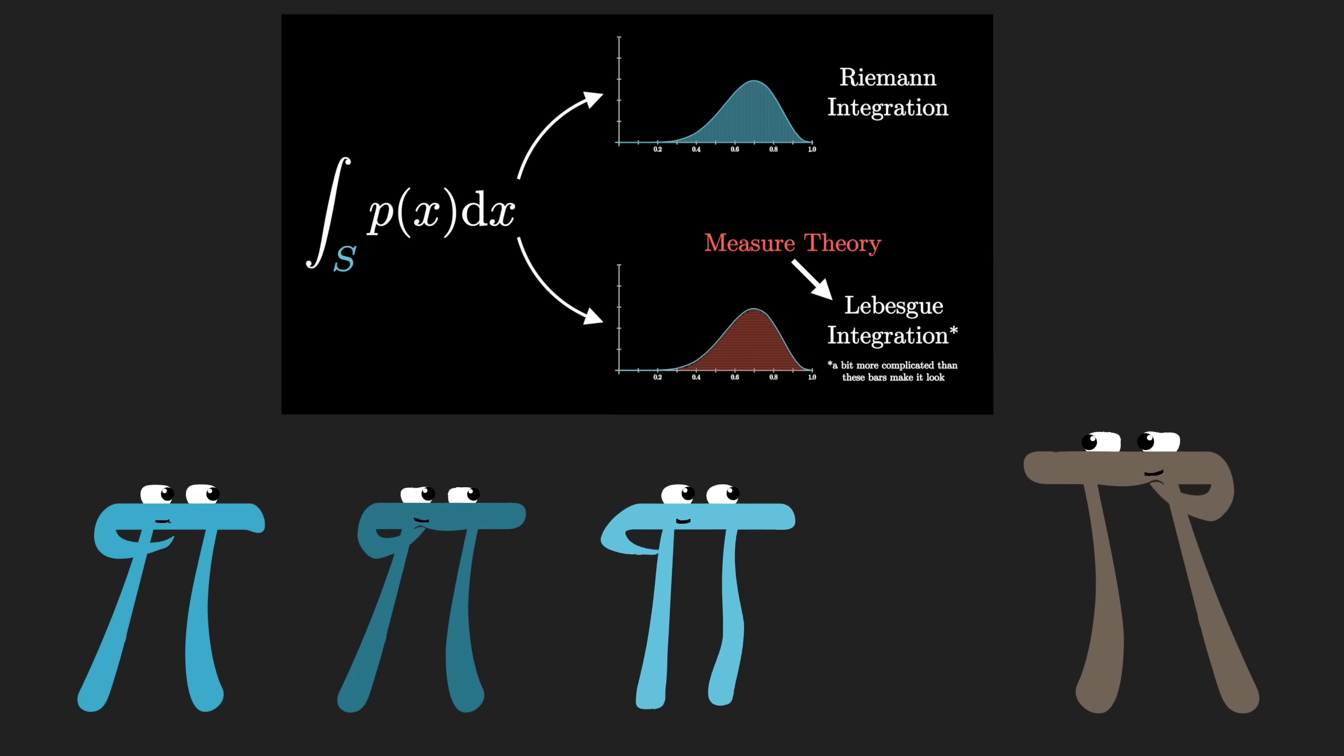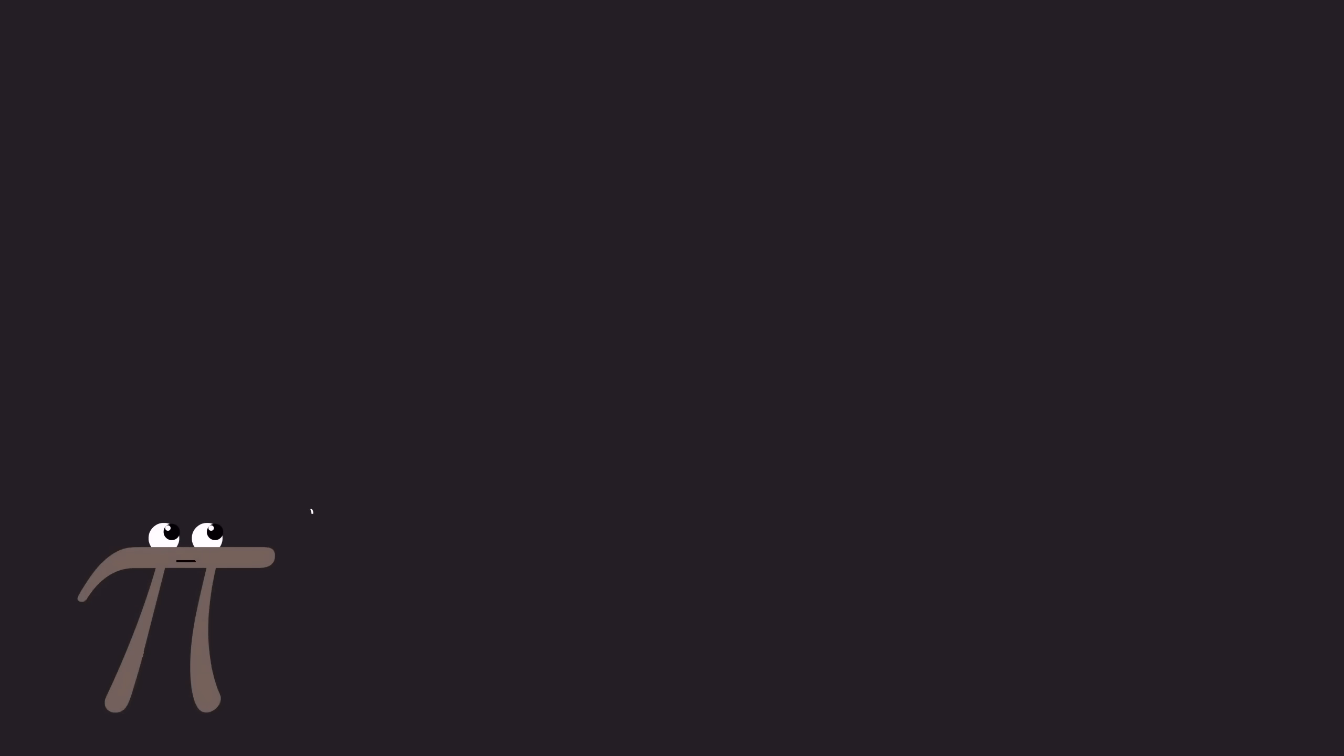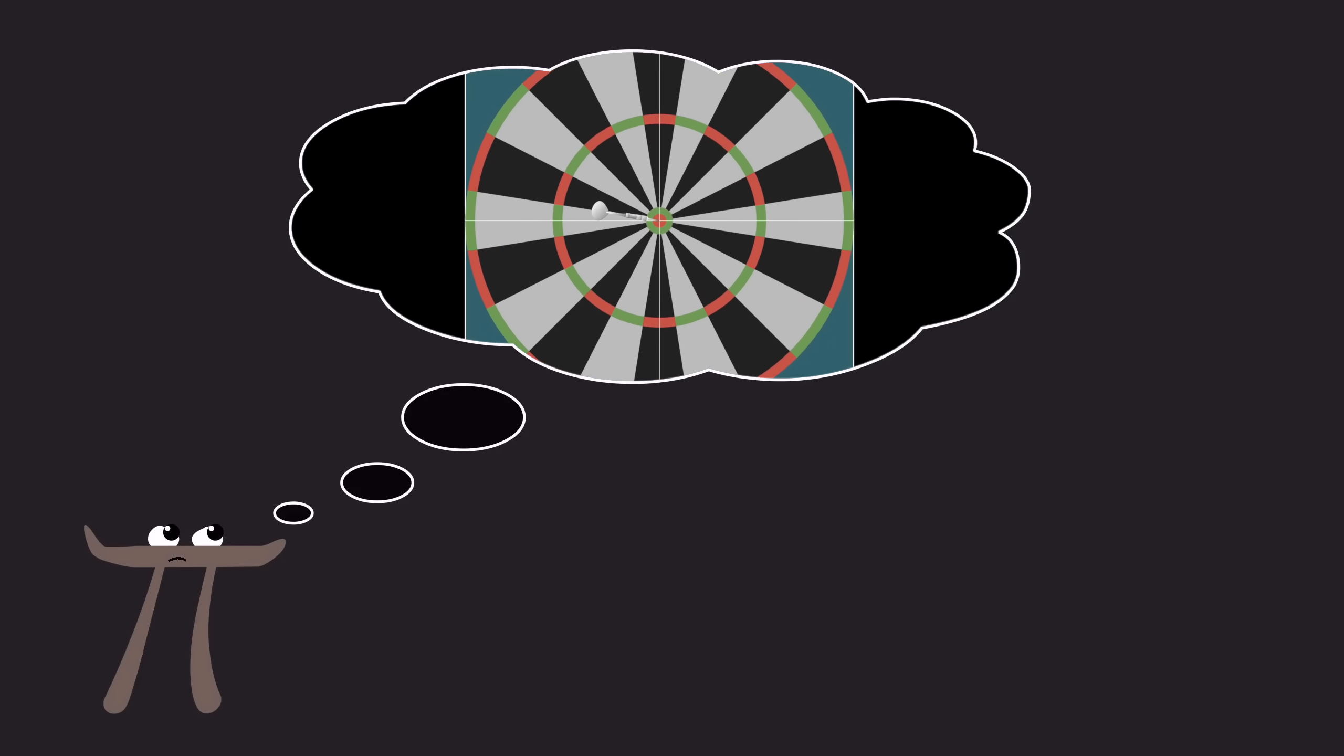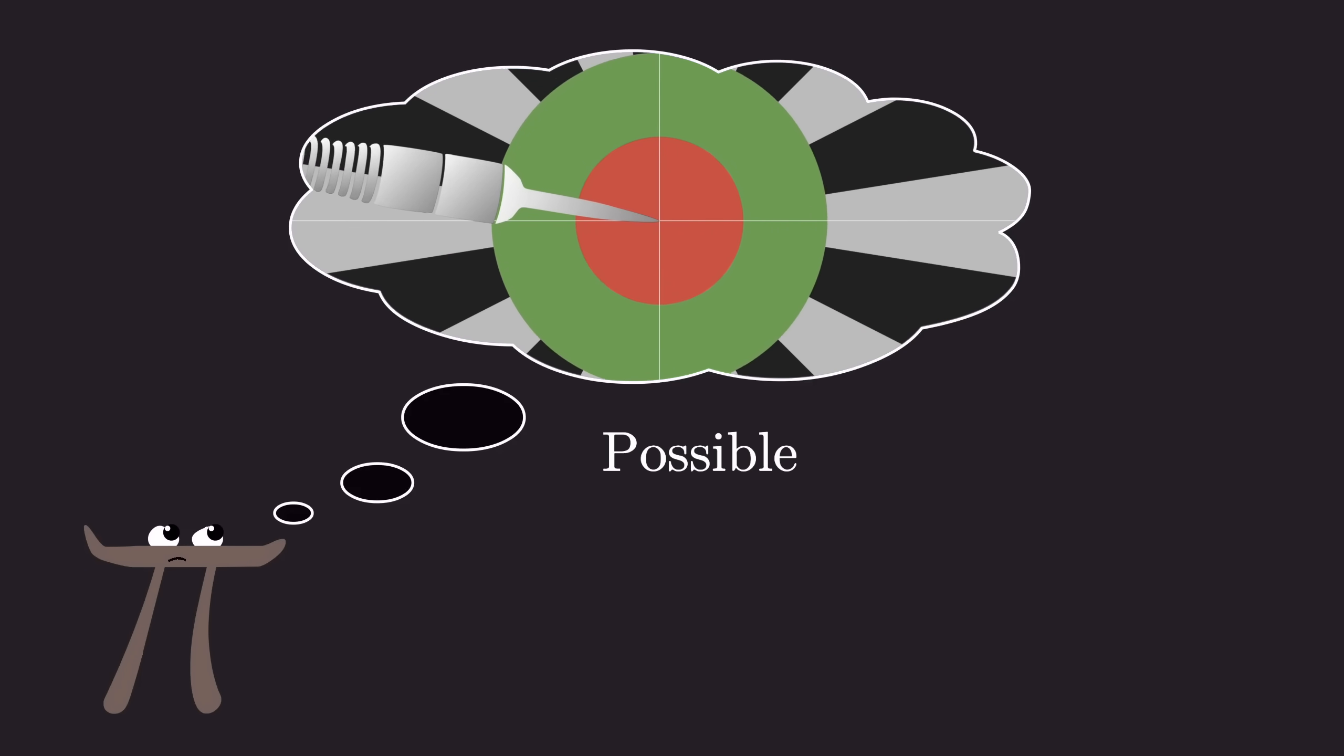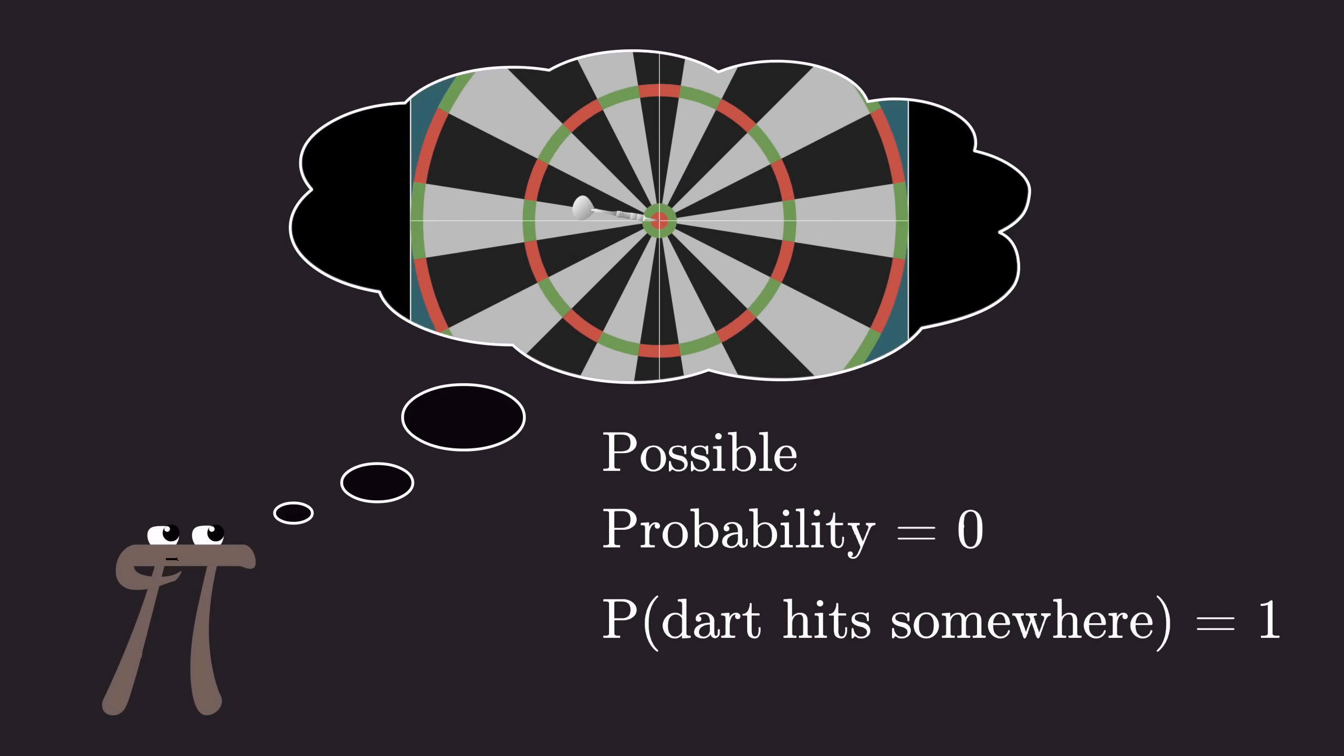If I look back to when I first learned probability, I definitely remember grappling with this weird idea that in continuous settings, like random variables that are real numbers or throwing a dart at a dartboard, you have a bunch of outcomes that are possible, and yet each one has a probability of zero, and somehow altogether they have a probability of one.